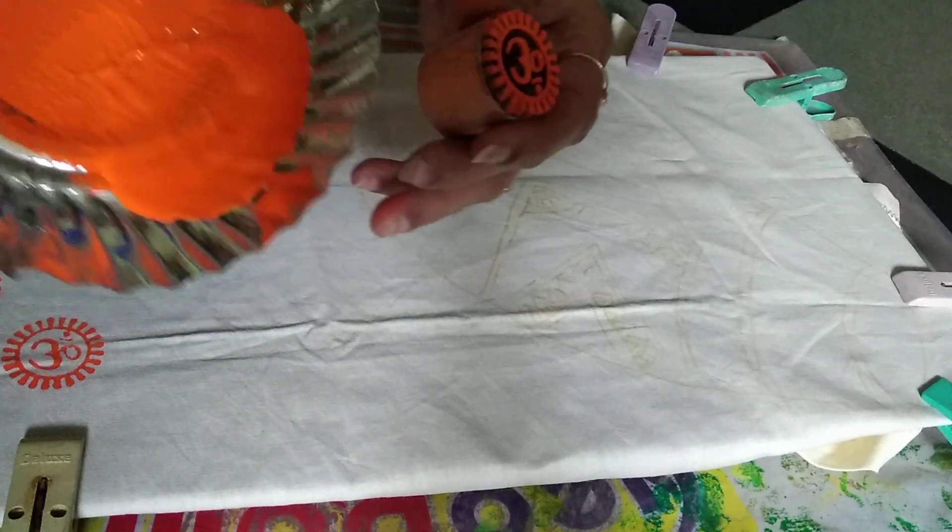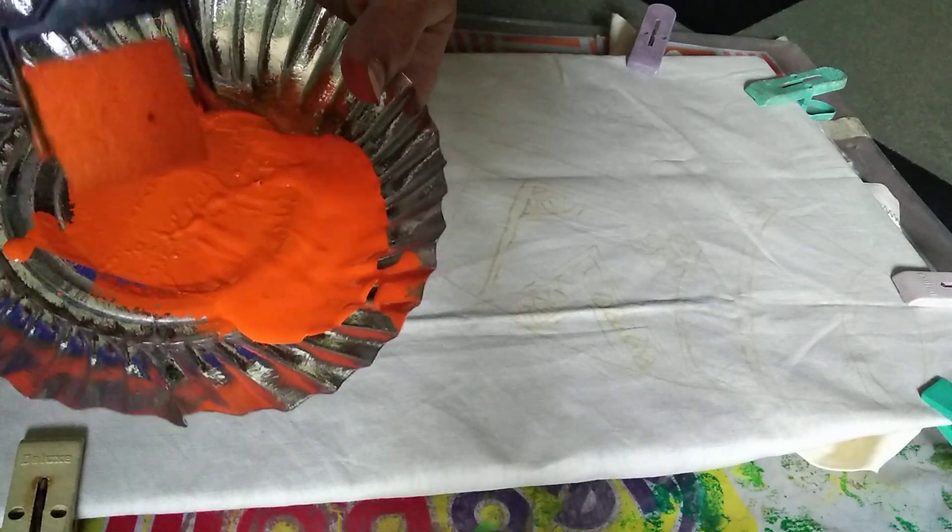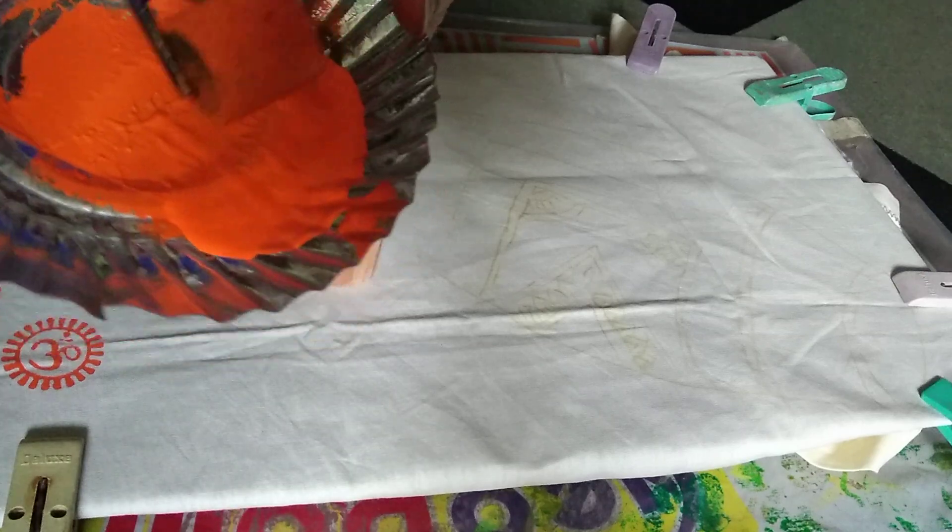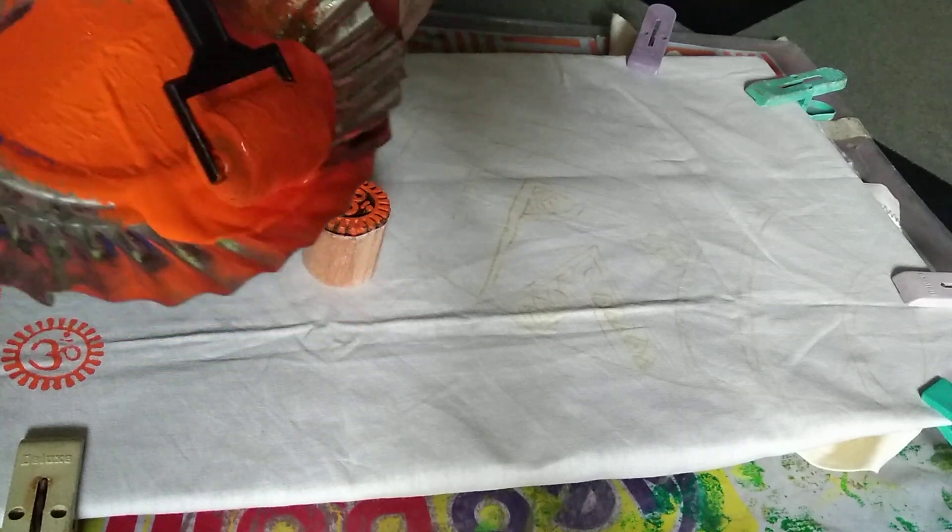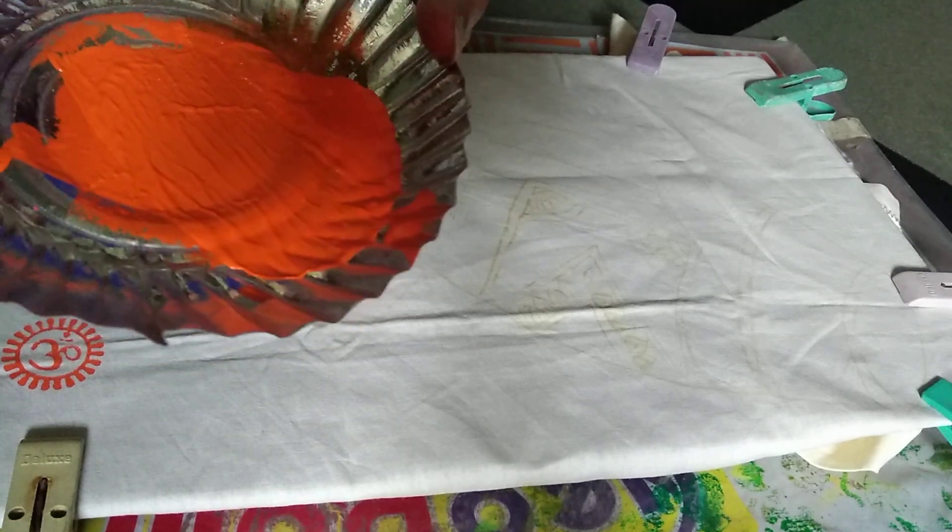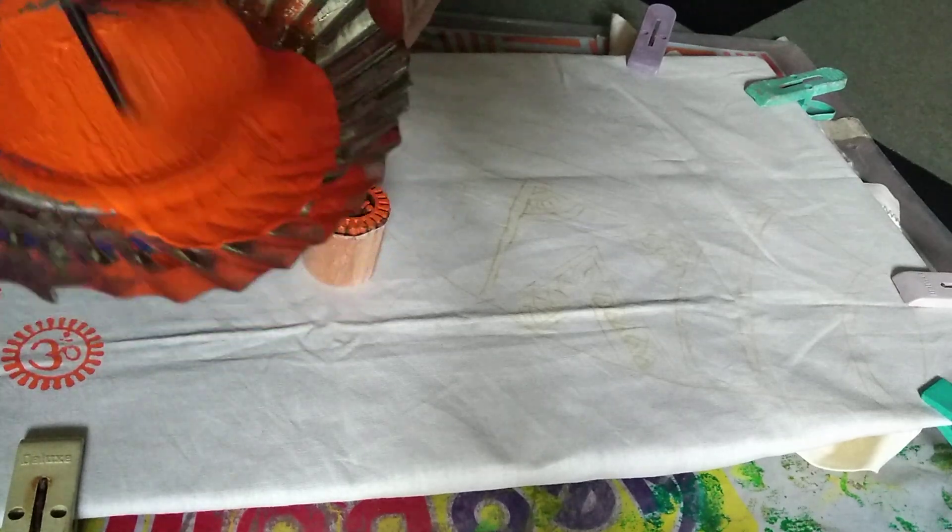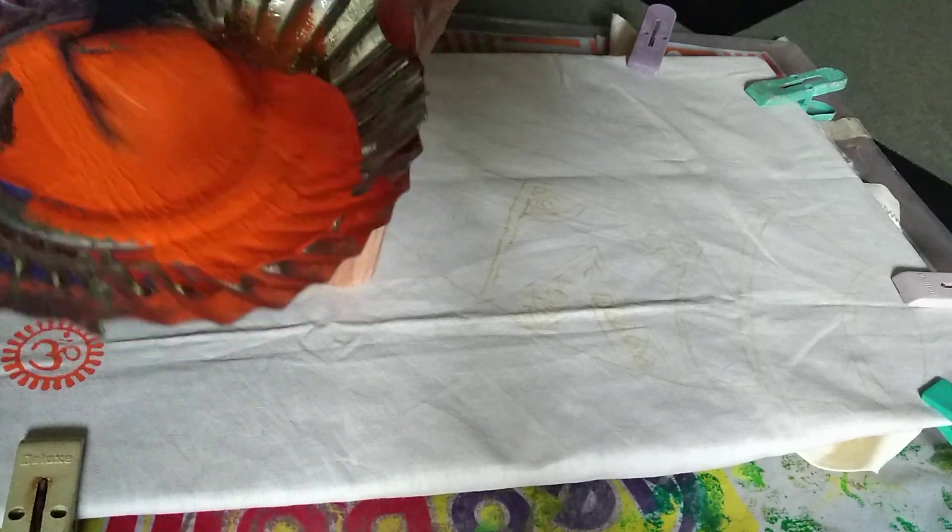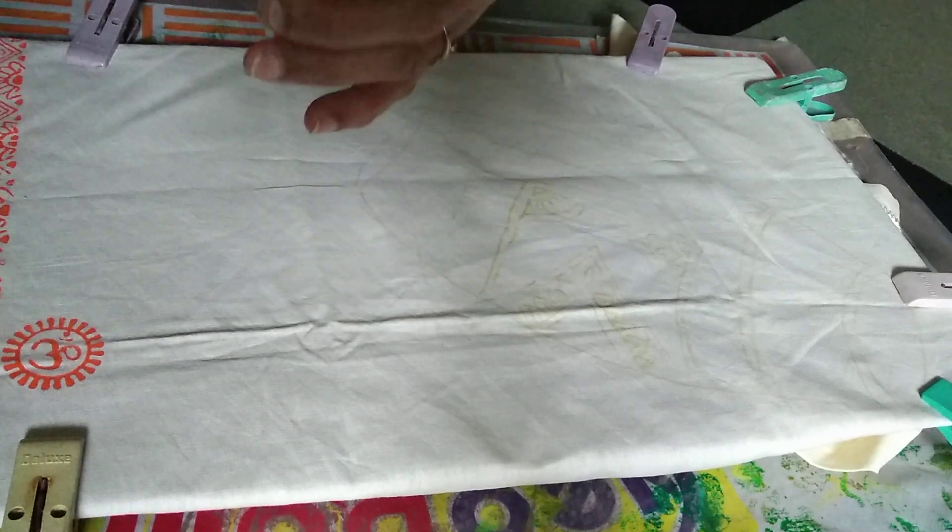This roller needs to be filled with the color. It has a sponge roller so it gets filled with the color nicely. You can use a regular brush also to color this portion of the block.